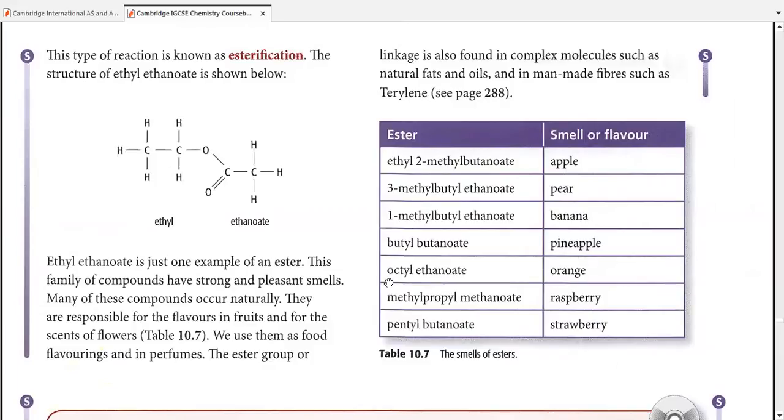Now, ethyl ethanoate is just an example of an ester. This family of compounds has these physical properties - please mark them: strong, pleasant smell, occur naturally in flavors of fruits and scents of flowers. They are used in food flavorings and perfumes.